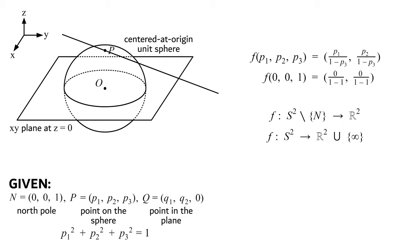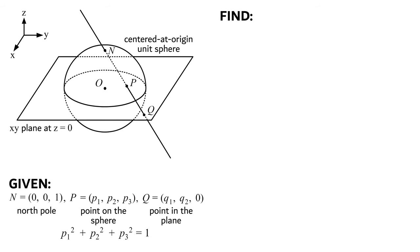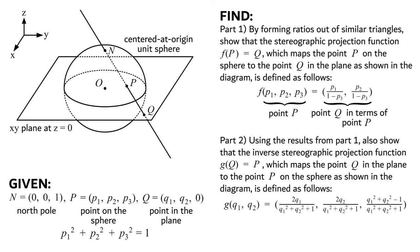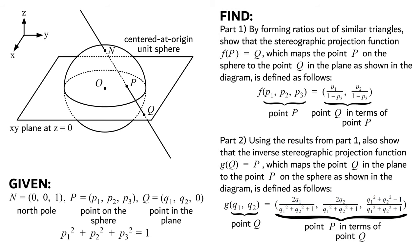All that we'll be doing next is focusing on finding the stereographic projection function along with its inverse. Part 1: by forming ratios out of similar triangles, show that the stereographic projection function f of p equals q, which maps the point p on the sphere to the point q in the plane, is defined as follows. For this forward function, we simply plug in point p and the output is point q in terms of point p. There is no third coordinate in the output because point q's third coordinate is zero. Part 2: using the results from part 1, also show that the inverse stereographic projection function g of q equals p, which maps the point q in the plane to the point p on the sphere, is defined as follows. We plug in an arbitrary point q from the plane and the output is point p in terms of point q.